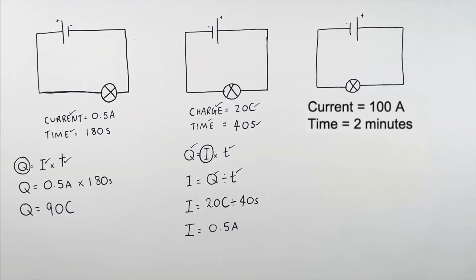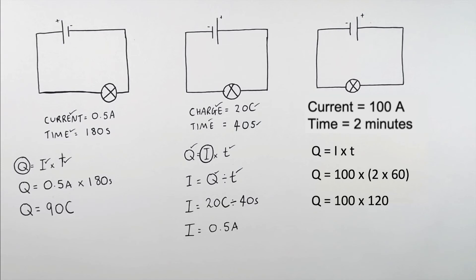In the last example, we have a current of 100 amps and the circuit was switched on for 2 minutes. We're trying to work out Q (charge), so Q equals I times T. That's 100 amps times — not minutes, but seconds — so you must multiply 2 minutes by 60 to convert to seconds. So it's 100 times 120, which gives a charge Q of 12,000 coulombs.